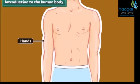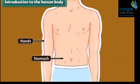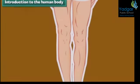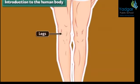Another body part is the stomach. It is a kind of bag where all the food that we eat gets stored for digestion. And finally, our legs help us to stand straight, walk, run and play.